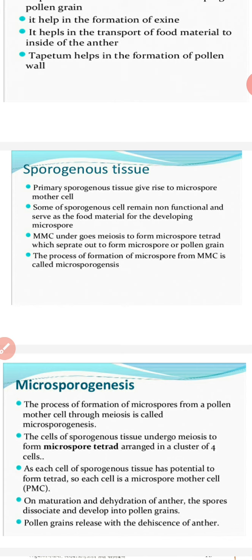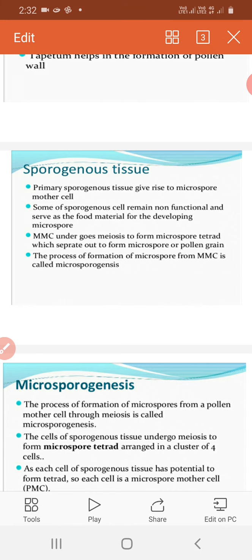Primary microsporogenous cells, or pollen mother cells, are the primary microsporocytes. In many cases, the microspore mother cells have been formed by many sources of microsporogenous cells.